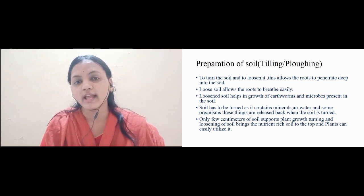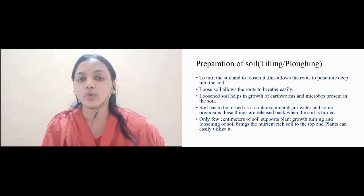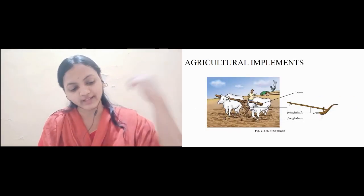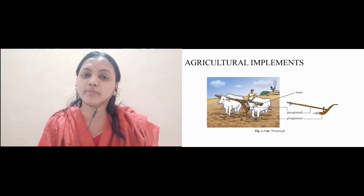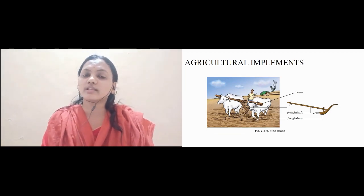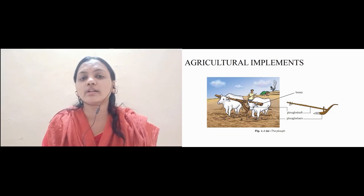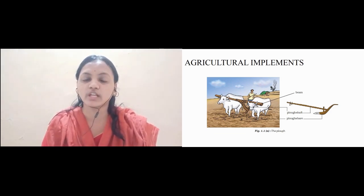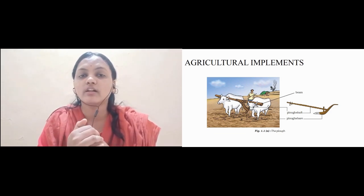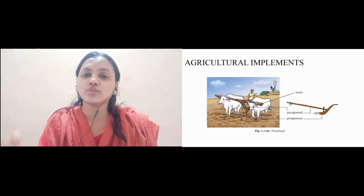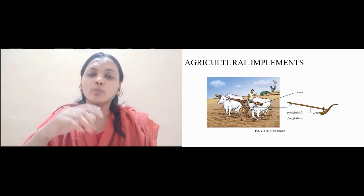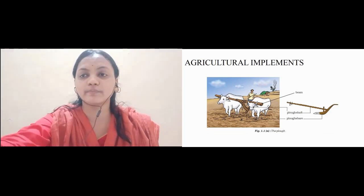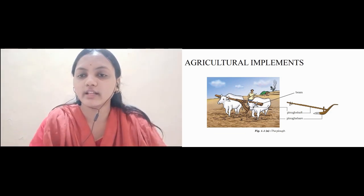The loosening and turning of the soil is called plowing and tilling. Our next part is an agricultural implement used since ancient times, that is a plow. A plow consists of a plow shaft and a plow share. The plow shaft is used to hold and the plow share is used to dig up. The plow share is made of metal and the plow shaft is made of wood.